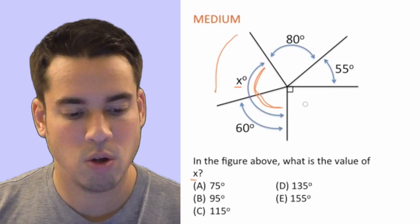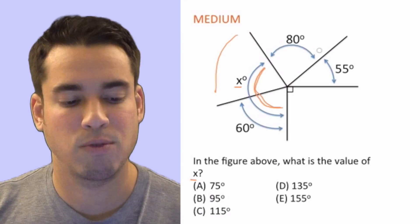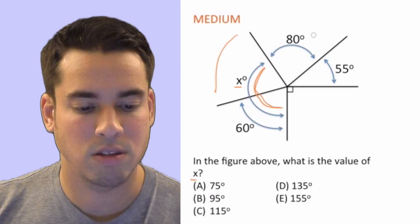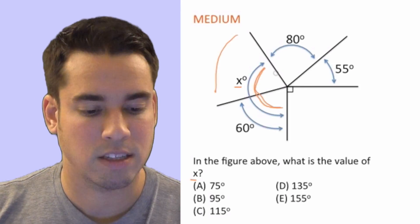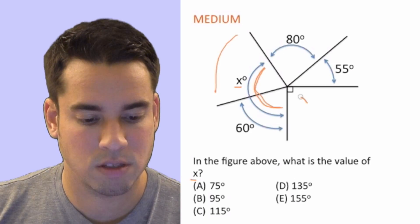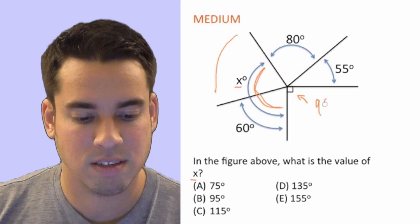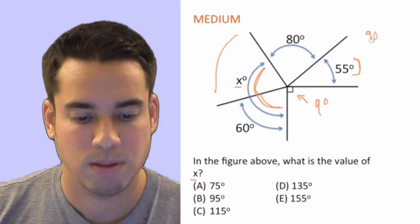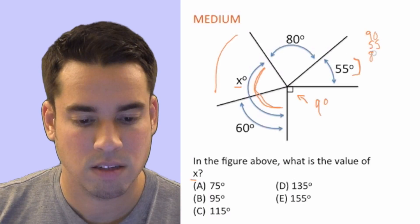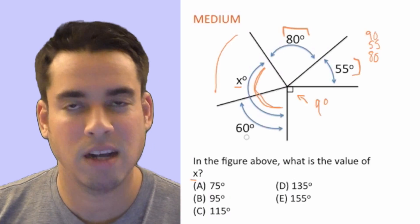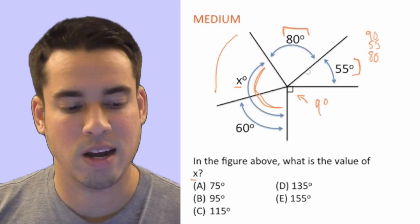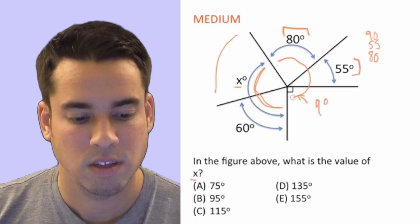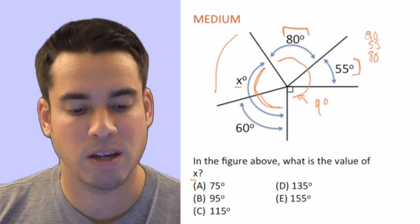This angle goes all the way around, and when you go all the way around you have 360 degrees. So we'll use that as our total and subtract all the known angles to find X. We have a right angle symbol here, so that's 90 degrees, and we also have 55 degrees and 80 degrees. Now, do we need to factor in the 60 degrees? We actually don't — that's a red herring, because X already includes that 60 degrees.